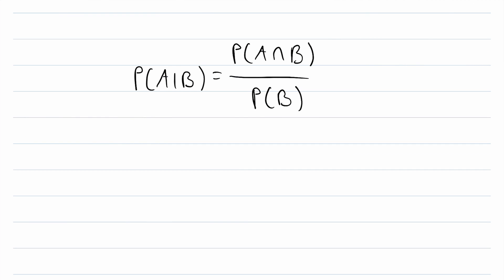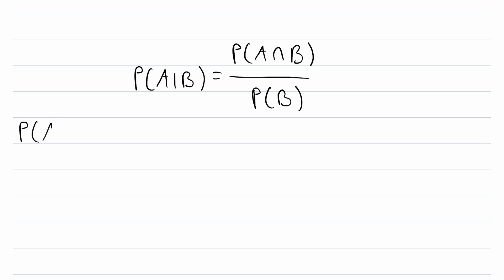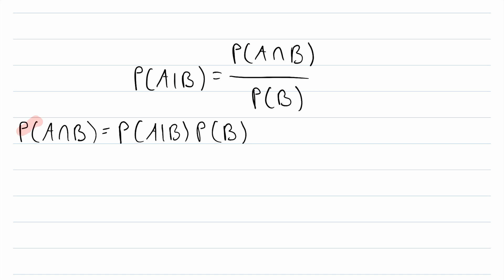Quickly, from the formula for conditional probability we also get a formula for the probability of the intersection of two events. This formula is tremendously useful and we'll be using it when we discuss the law of total probability.